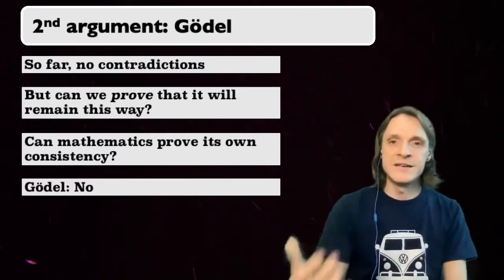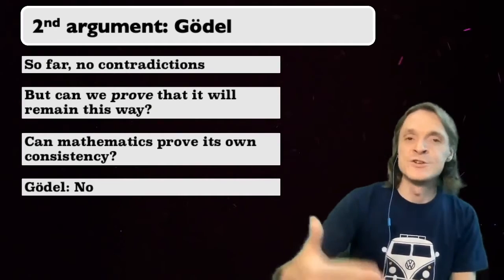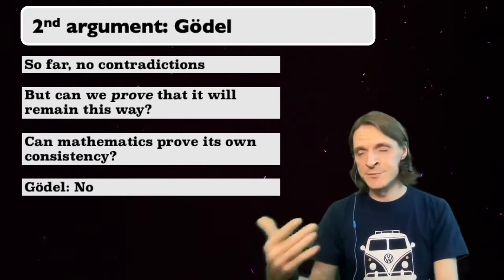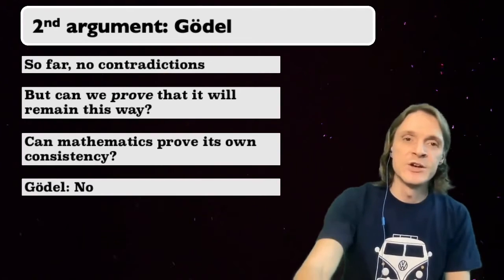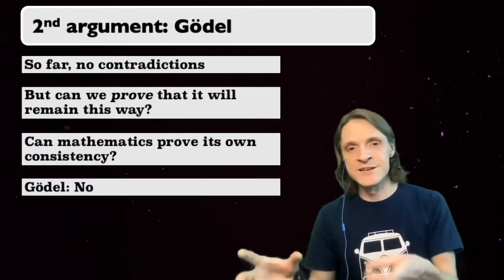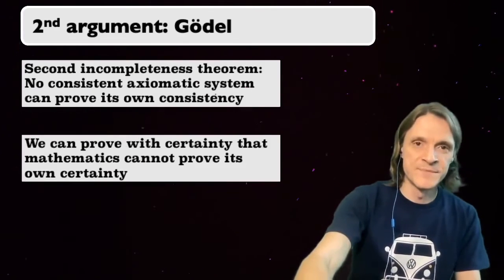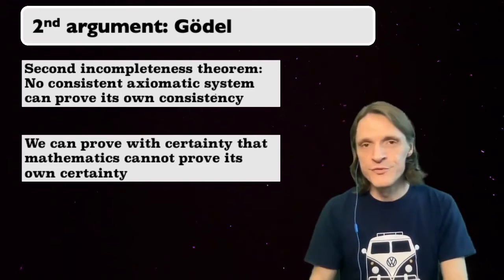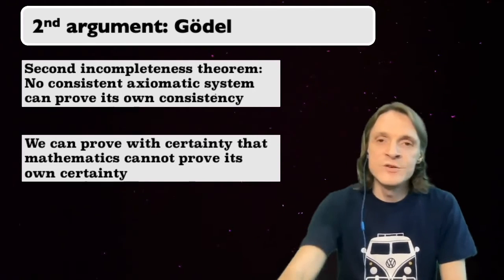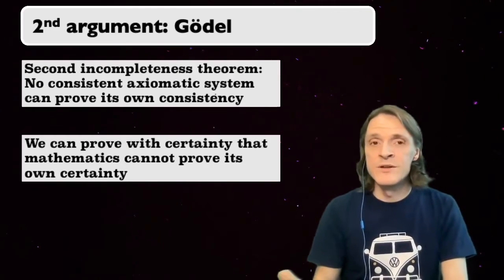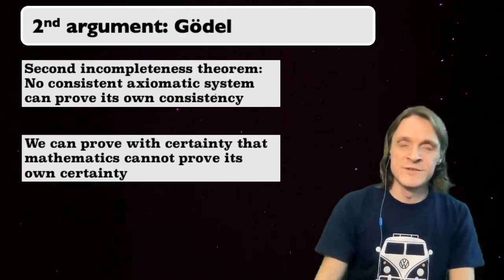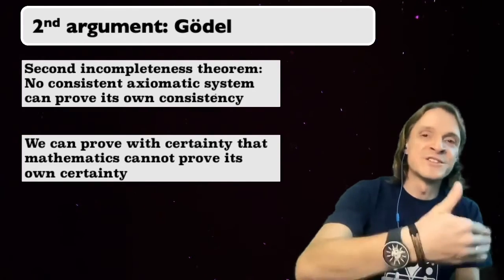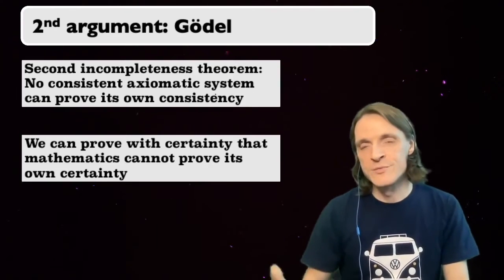And this is where Gödel's second incompleteness theorem enters. Gödel was able to prove that no axiomatic system can prove its own consistency. Think about it this way. We can prove with certainty that mathematics cannot prove its own certainty. It does not mean that mathematics is not certain, but it is not able to prove that it is certain. And that is actually almost equally bad in mathematics. There is provable uncertainty associated with whether or not mathematics is certain.